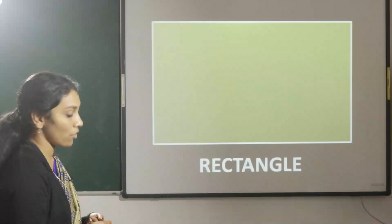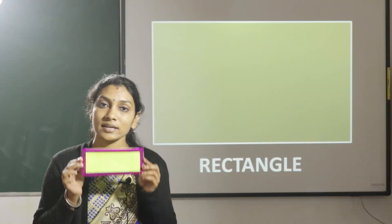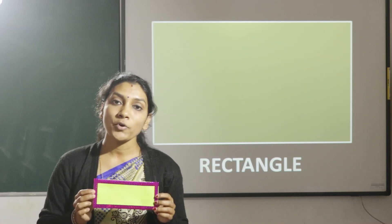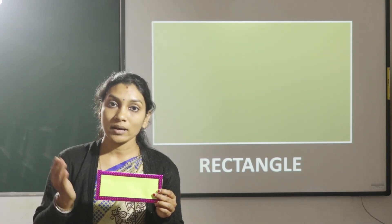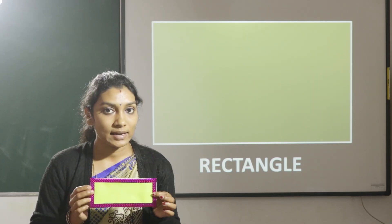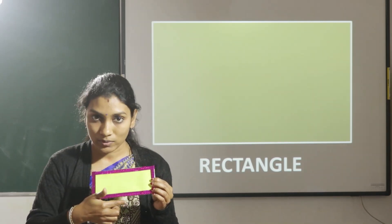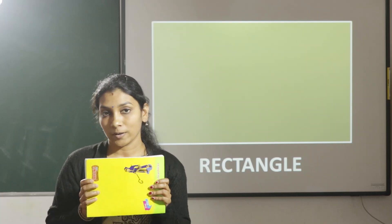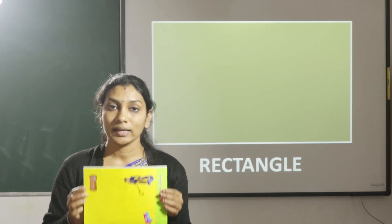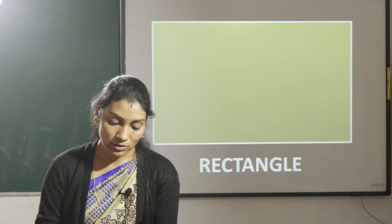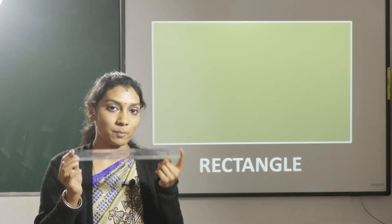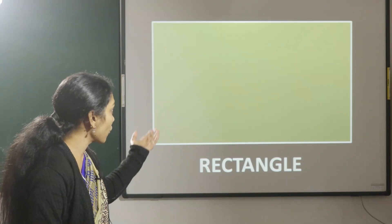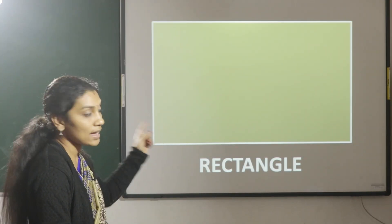Now let us see the shape of a rectangle. A rectangle has four sides. Here the opposite sides are equal. In a square all the sides are equal, but in a rectangle the opposite sides are equal — this side is equal to this one and this side is equal to this. Now here I have a book. So what's the shape of this book children? It is a rectangular shape. And also you can see a scale — here the opposite sides are equal.